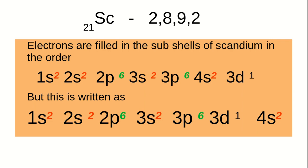But this is written in shell order as: 1S2, 2S2, 2P6, 3S2, 3P6, 3D1, and 4S2 — that is the order of the shells.